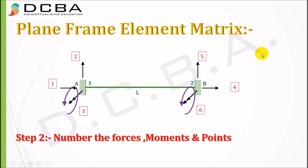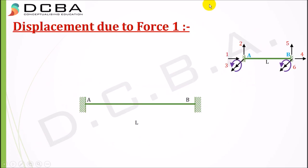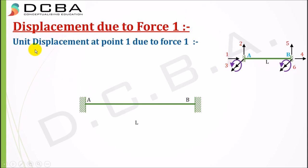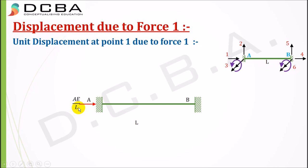Do not make any mistakes while numbering. Now we check displacement due to force 1. Force 1 is an axial force. We apply a unit displacement at point 1 due to force 1 — it displaces in the axial direction. The force required to cause a unit displacement in the axial direction is AE/L. Please refer to my previous video on stiffness matrix basics for how these values are derived — the link is in the description.